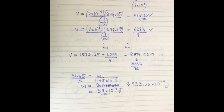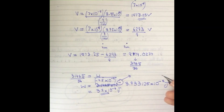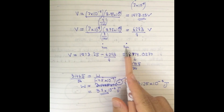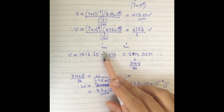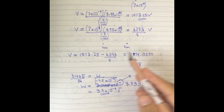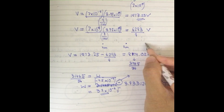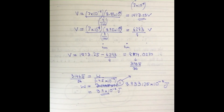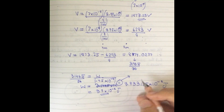The negative sign just indicates that the work done is applied in the opposite direction, because I subtracted in the order 4 minus 9. If I had done 9 minus 4, I would have gotten a negative value here. The sign just indicates direction of motion and can be noted or ignored depending on context.